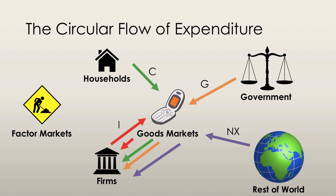All this money is now at the firms. What do they do with it? They pay their employees, board of directors, and anyone else working for them. So this money goes to land, labor, capital, and entrepreneurship — which is in the factor market. From the factor market, the money goes straight to households because the factor market is really composed only of households. This is known as household income.